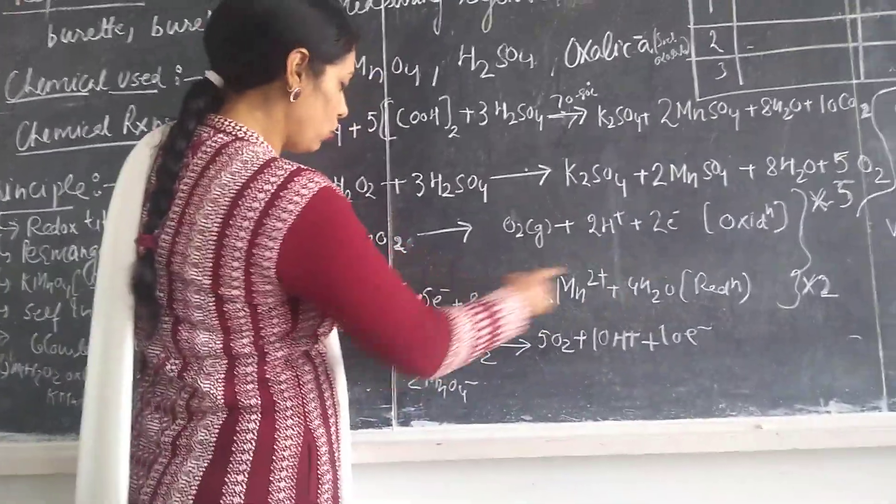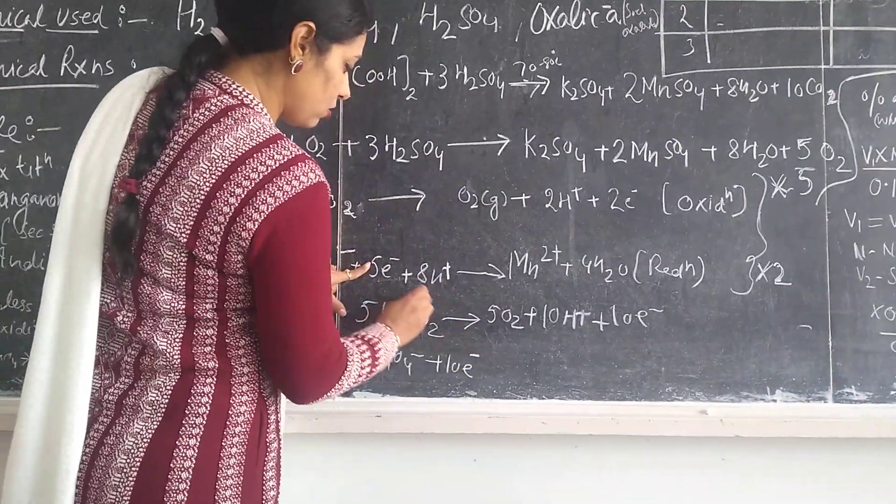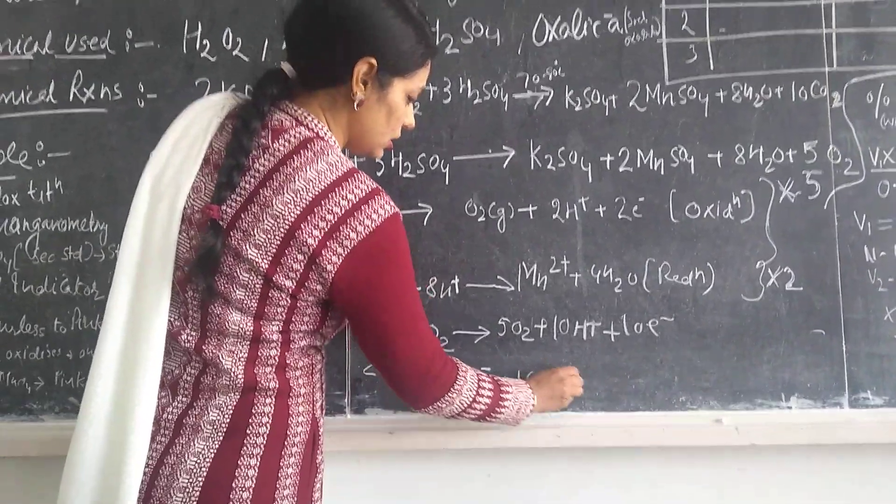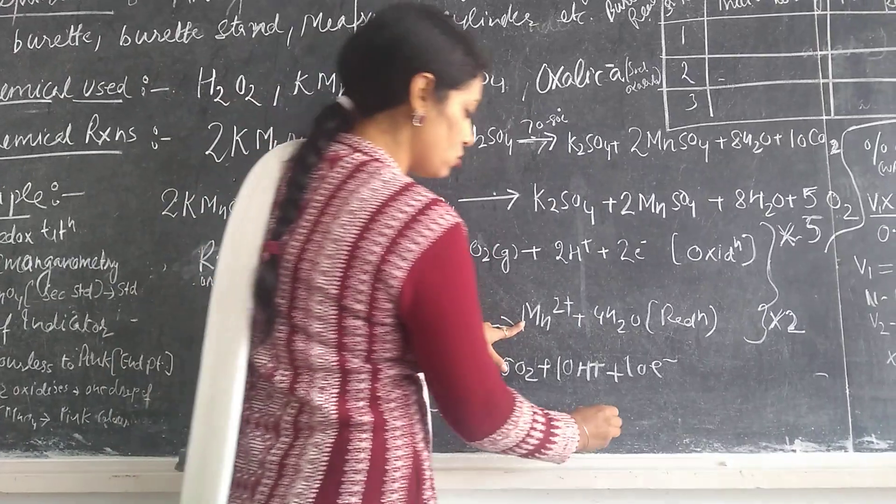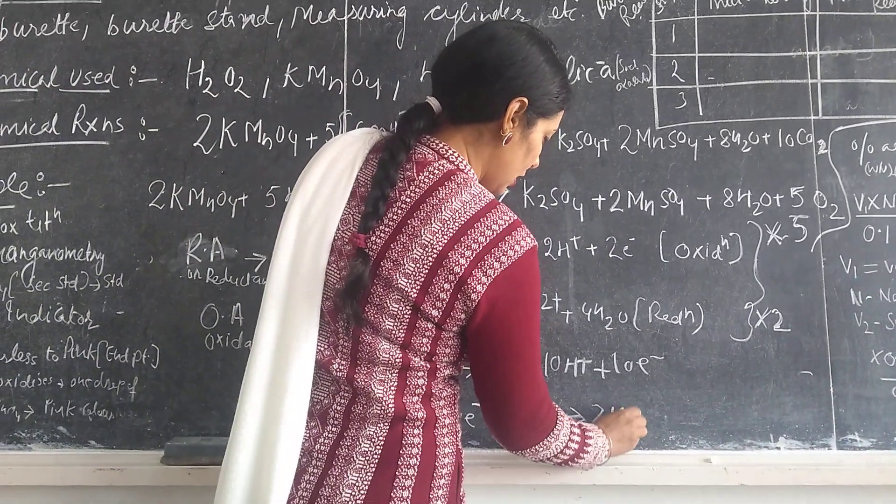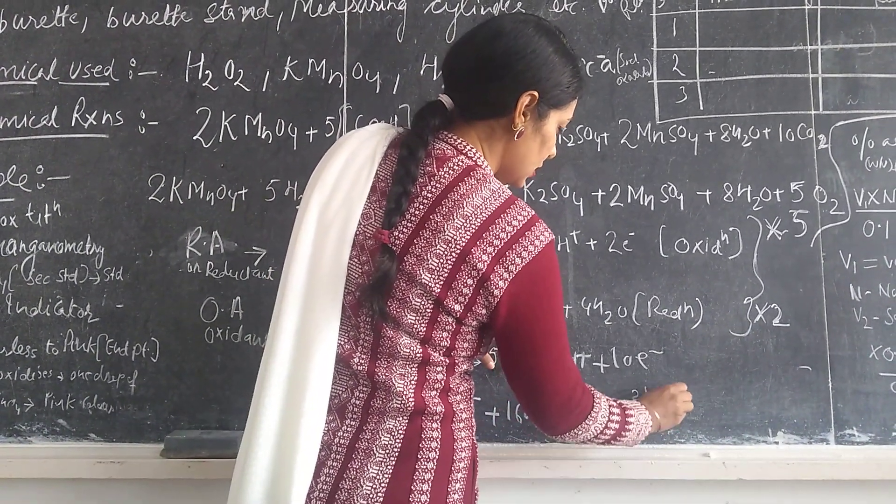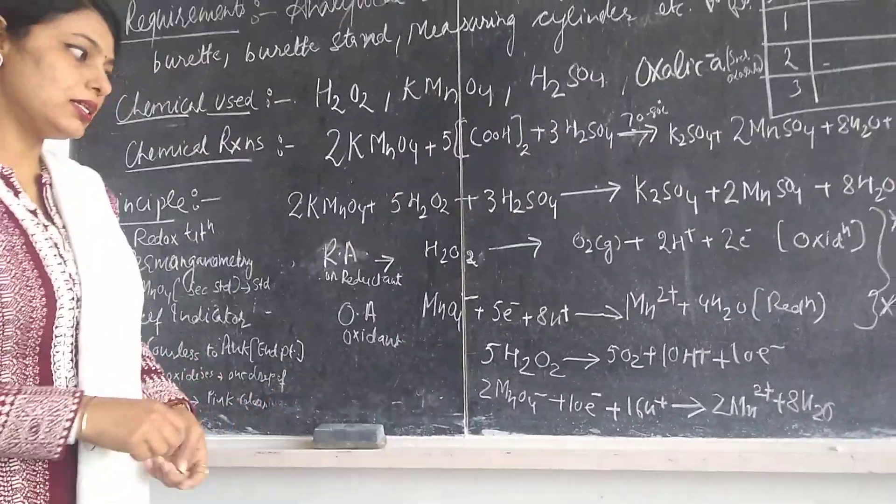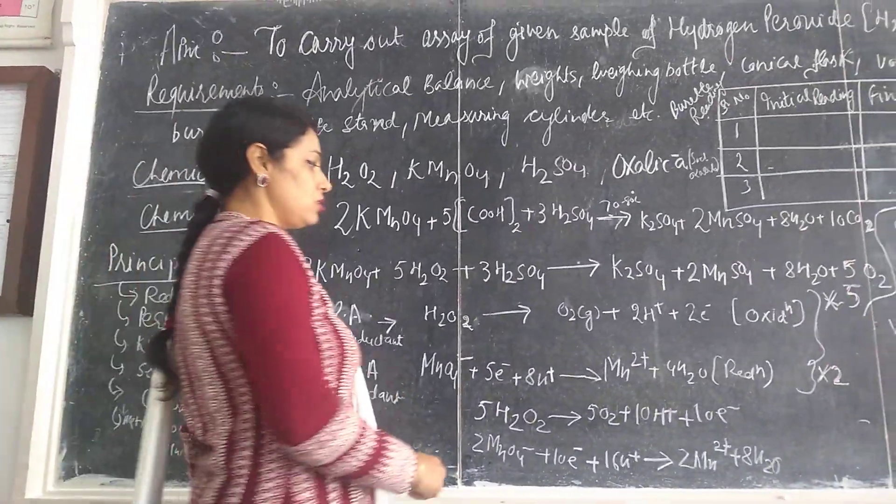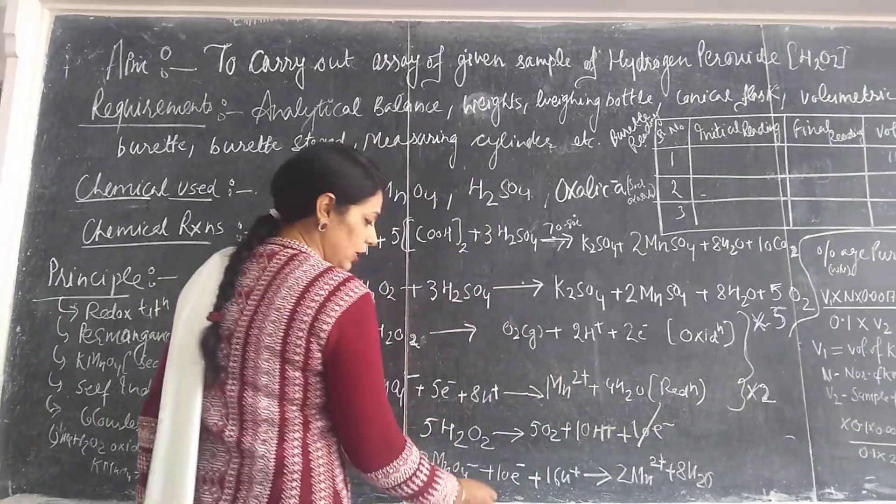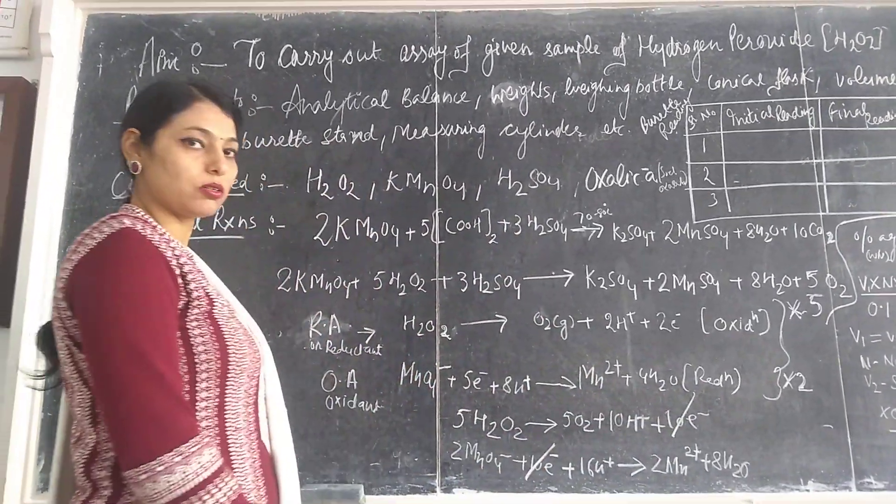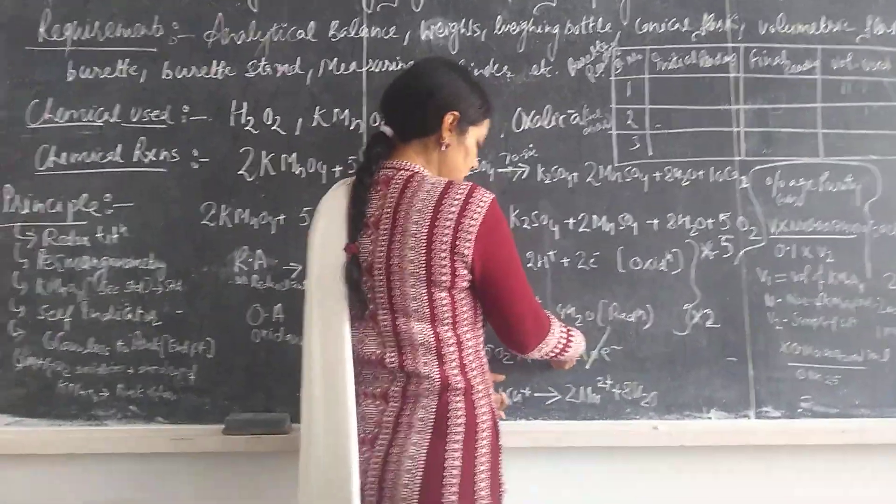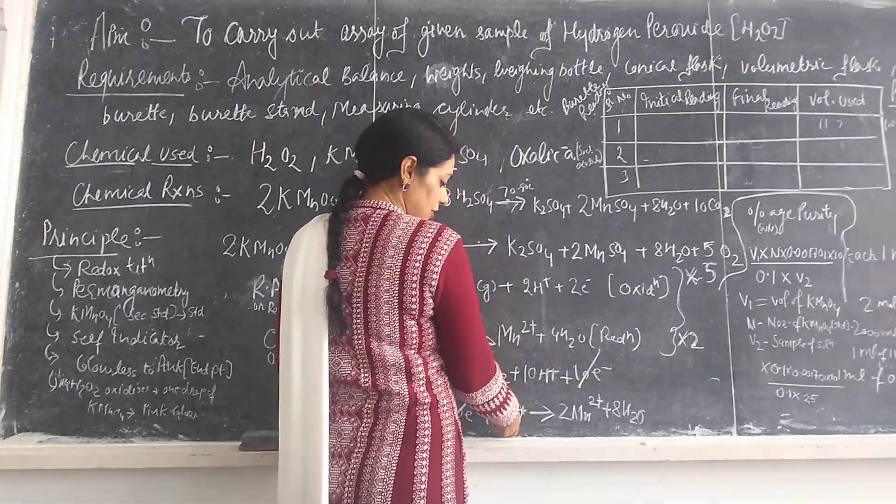We multiply this equation to get 2MnO4- plus 10 electrons plus 16 hydrogen ions. They will give rise to 2Mn2+ plus 8 moles of water. So when we balance these reactions, we combine these two reactions. See, here 10 electrons on both sides cancel out. Here you have 16H+, here you have 10H+, that gives you 6H+ on the reactant side.